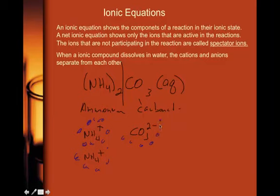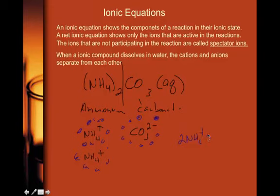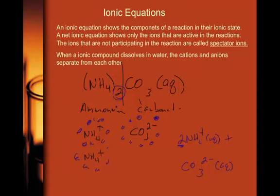Water is polar — it has a partial negative and partial positive charge. That partial positive charge connects to the negative ions, and the partial negatives attach to the positive ions, which is why they separate. So if you wrote (NH4)2CO3 aqueous, you could write that as 2 NH4⁺ aqueous plus CO3²⁻ aqueous. It is very important to understand what aqueous means on an atomic level: we are separating out the ions from each other.